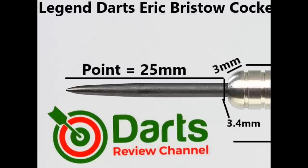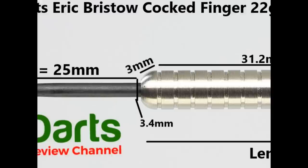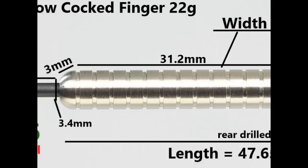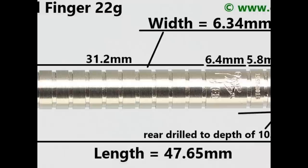It's fitted with the black coated 25 millimeter point. There's a slightly rounded bull nose that's 3 millimeters, and the bulk of the barrel is this flat ring grip with narrow grooves in between the rings, that's 31.2 millimeters. Then you've got the smooth section with the cocked finger logo, that's 6.4 millimeters, and then a couple more rings of 5.8 millimeters, then a small beveled section on the end of 1.2 millimeters. Length is 47.65 millimeters, width is 6.34 millimeters.